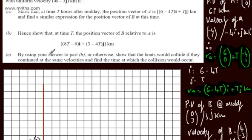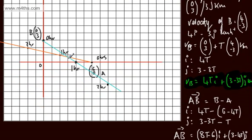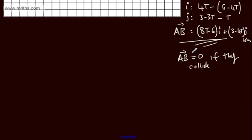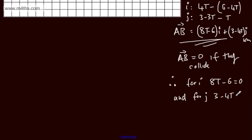In part C, we need to show that the boats would collide if they continued at the same velocities and find the time of collision. If they collide, vector AB must equal zero — the displacement between them is zero. So for i: 8t minus 6 equals 0, and for j: 3 minus 4t equals 0. We want a common value of t.